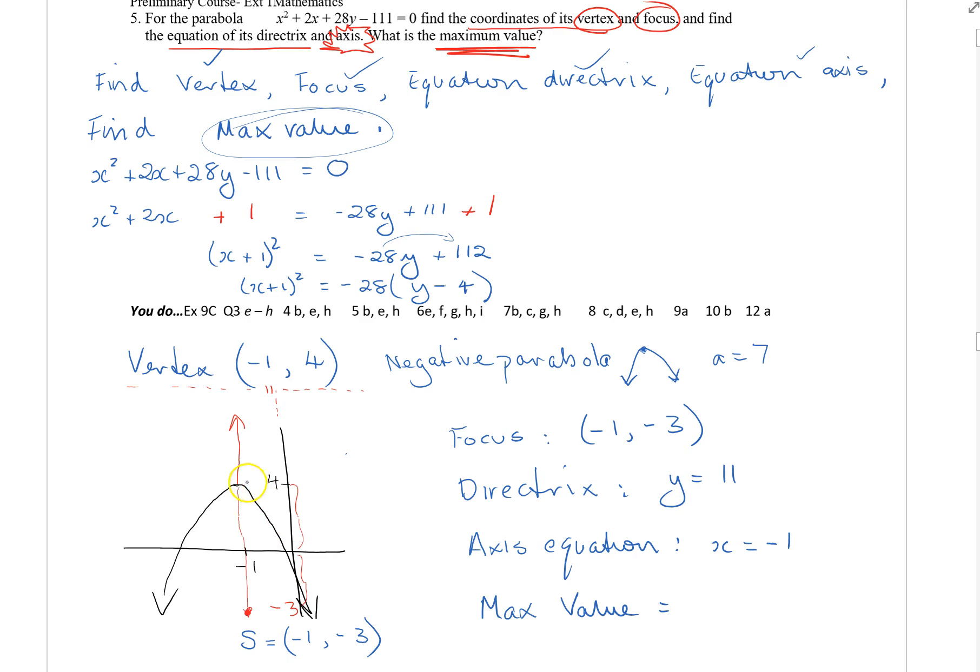And then the maximum value. So you can see from the diagram the maximum that it ever gets to is 4. That's pretty straightforward. You just write that straight down, observe that from your diagram.